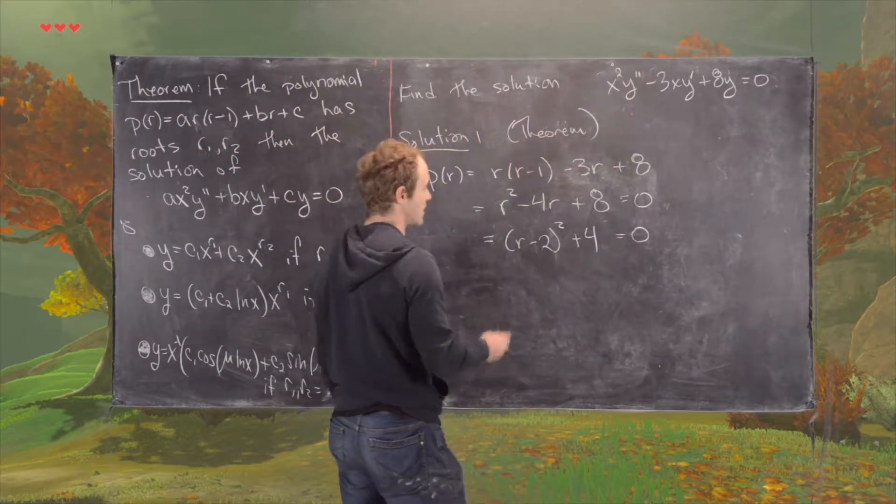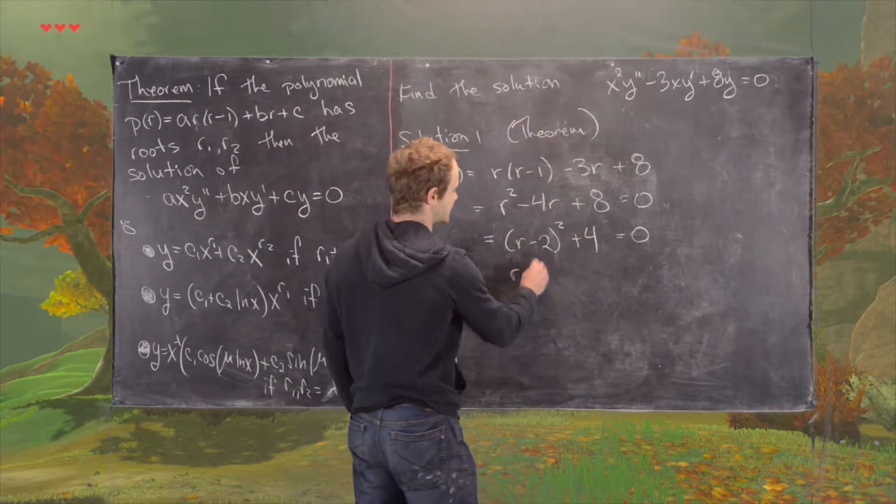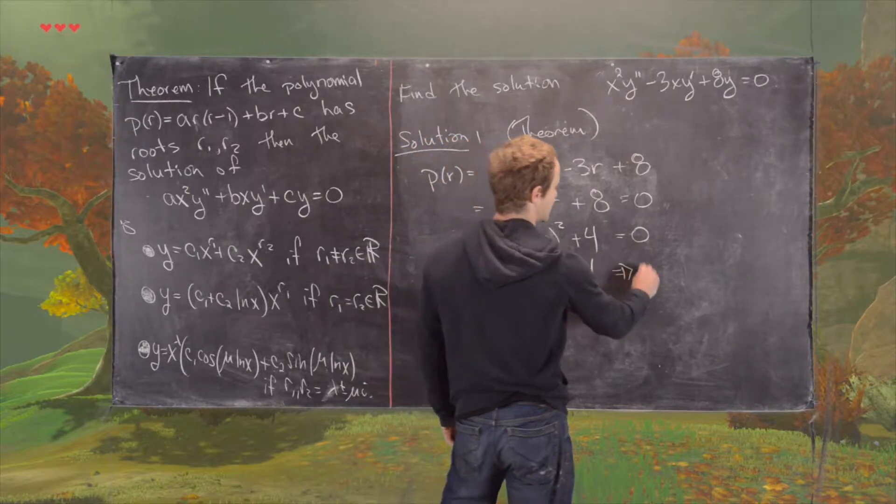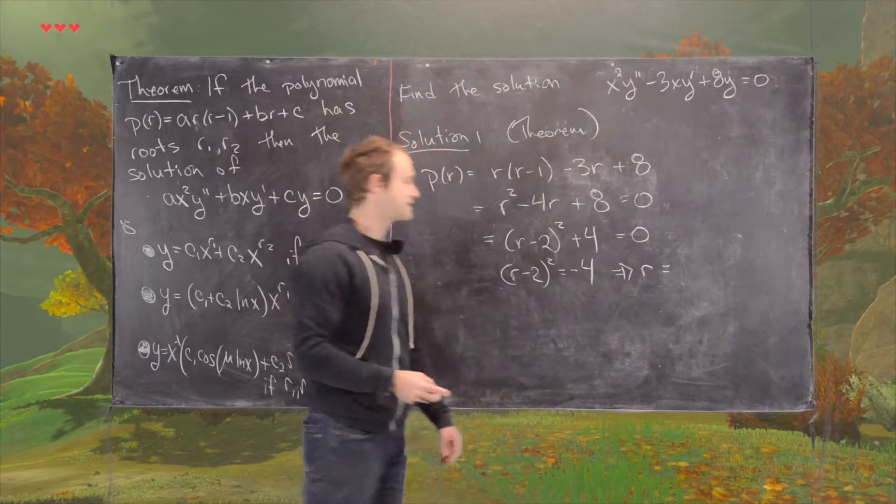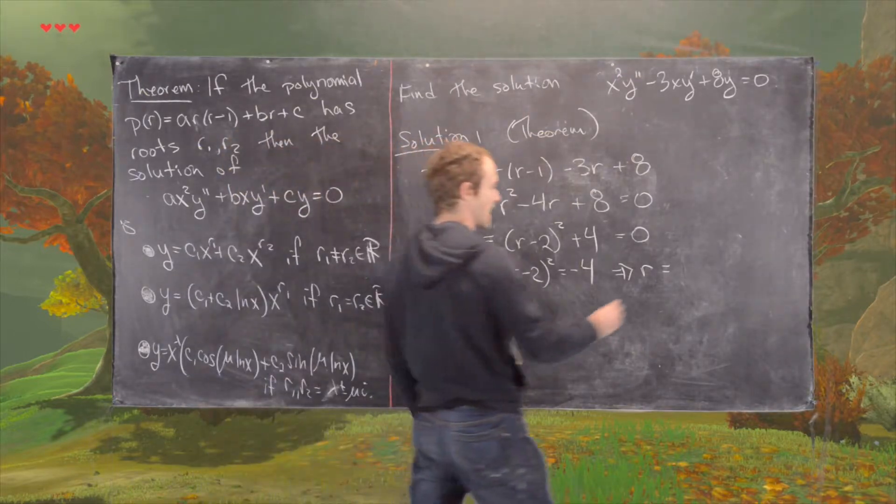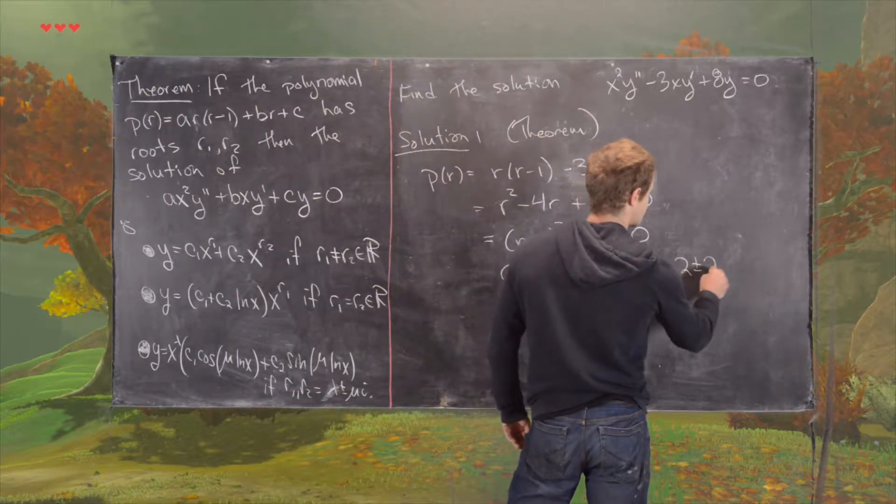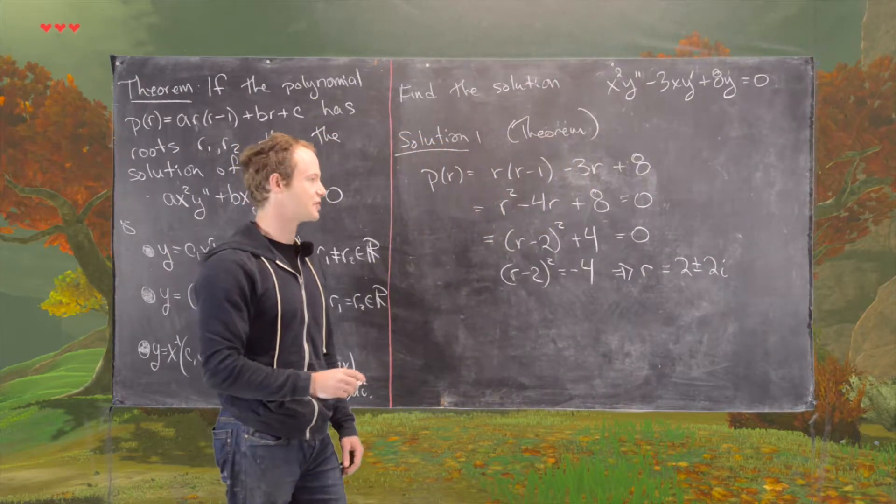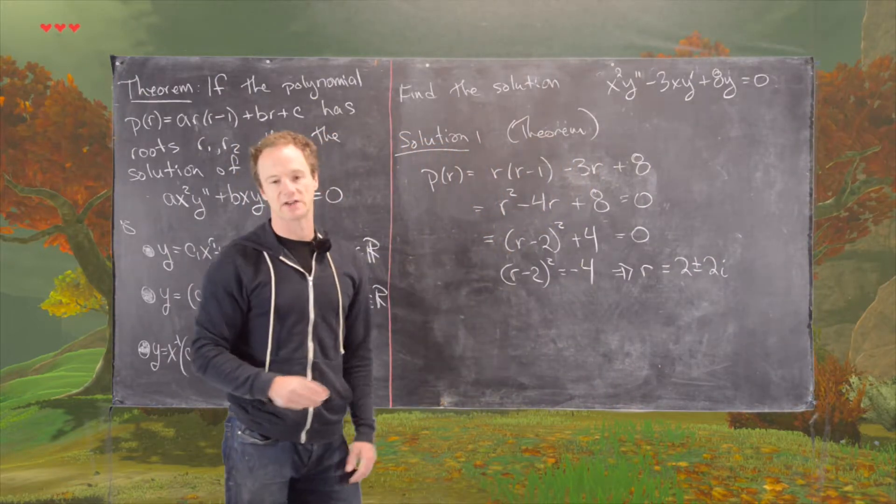We set this equal to zero, and we notice that R minus 2 squared equals negative 4, which tells us that we have roots given by 2 plus or minus 2i. We take the square root of negative 4 and get plus or minus 2i, then move that 2 over.